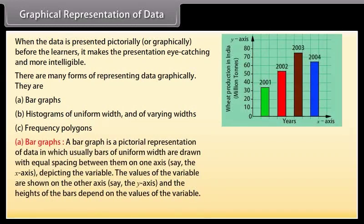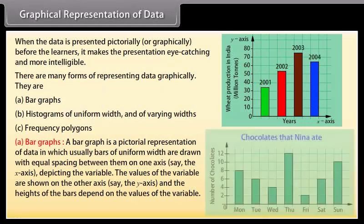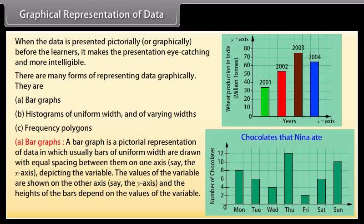Bar graph. We know that a bar graph is a pictorial representation of data in which usually bars of uniform width are drawn with equal spacing between them on one axis, say the x-axis, depicting the variable. The values of the variable are shown on the other axis, say the y-axis, and the heights of the bars depend on the values of the variable.